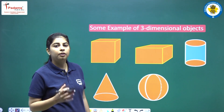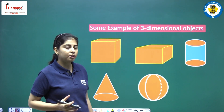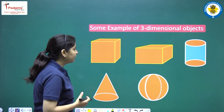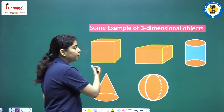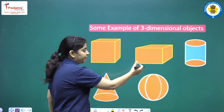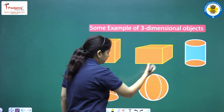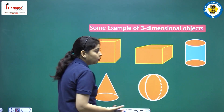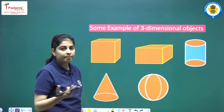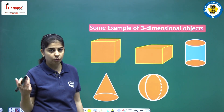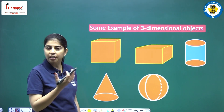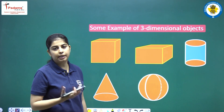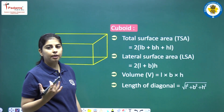We are going to look at different 3D shapes. We have: cube, cuboid, cylinder, cone, hemisphere, and also a frustum. These are all 3D objects that we have studied in junior classes.